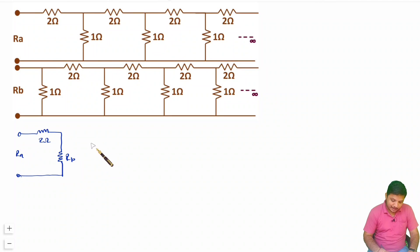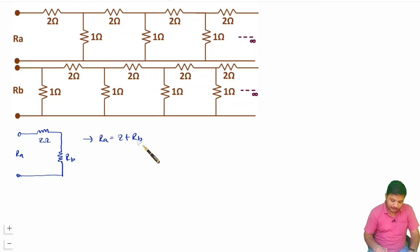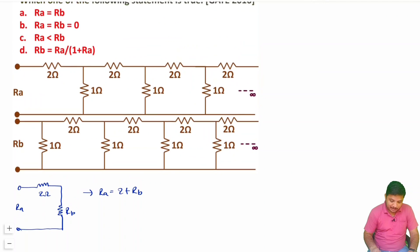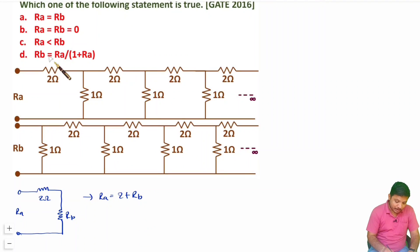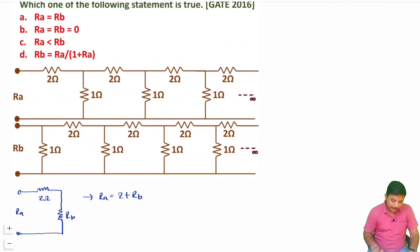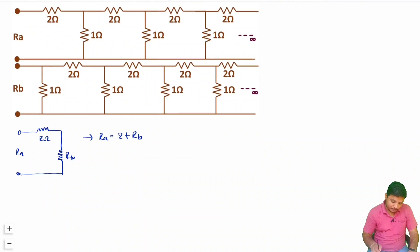Based on this, I can say RA equals 2 plus RB. Now let me check whether this answer is among the options. I don't see RA equals 2 plus RB given here, so I need to look for another solution.